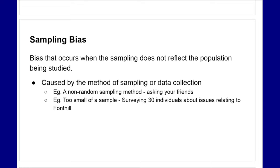Sampling bias is bias that occurs when the sampling does not reflect the population being studied. This is usually caused by the method of sampling or data collection, because that is how we gather our information. If the method of sampling or how we're collecting our data is skewed or improper, that can cause some sampling bias.